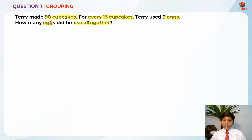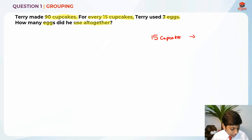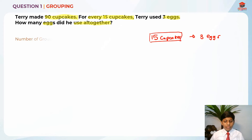So he only made 90 cupcakes. Let me write this down. Every 15 cupcakes, he used 3 eggs. I'm going to find how many sets — how many groups of 15 does he need. In order to find the number of groups, I'm going to take 90 divided by 15.